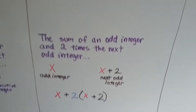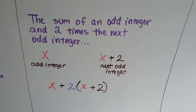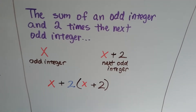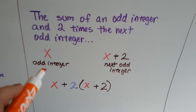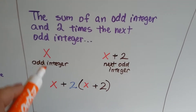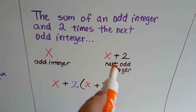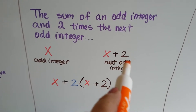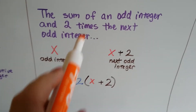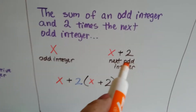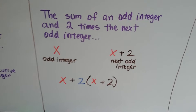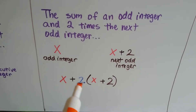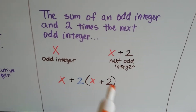If it said the sum of an odd integer and two times the next odd integer — there's our odd integer, and that's the next odd integer because it goes up by 2. So if we had 2 times the next odd one, it would be x plus 2 times the quantity x plus 2.